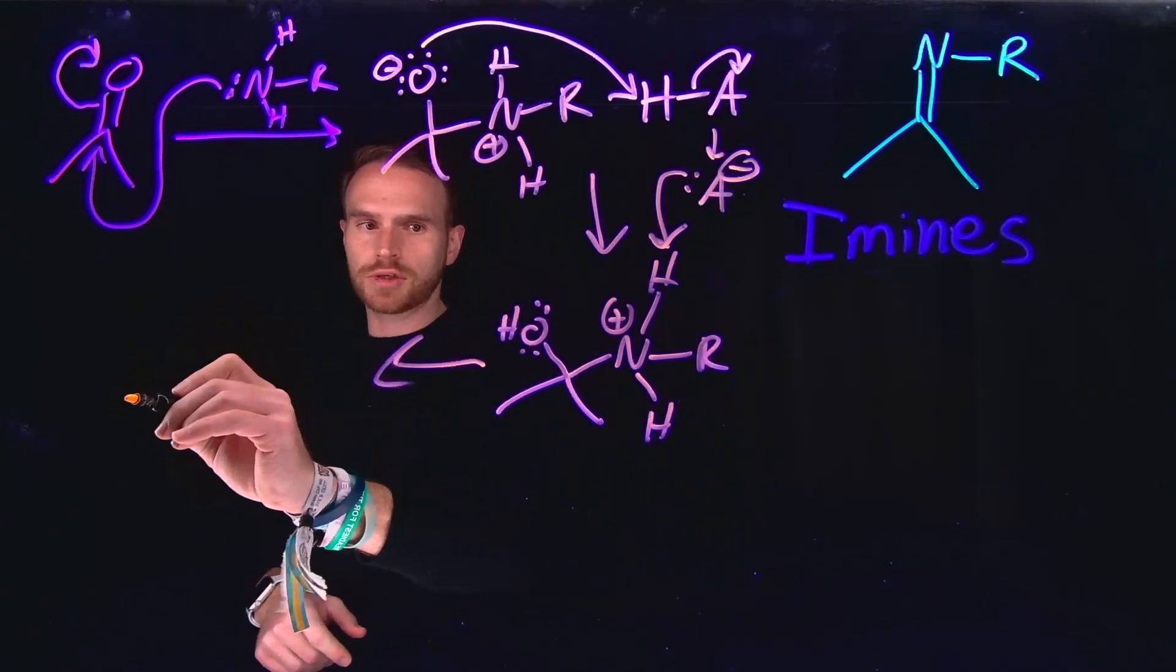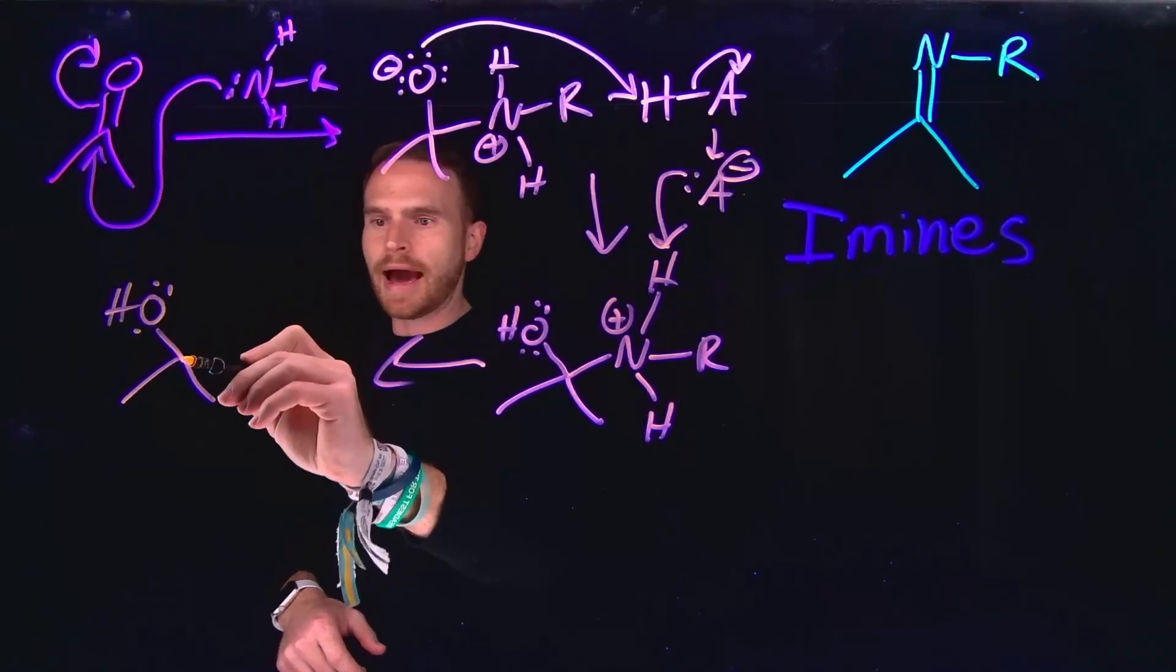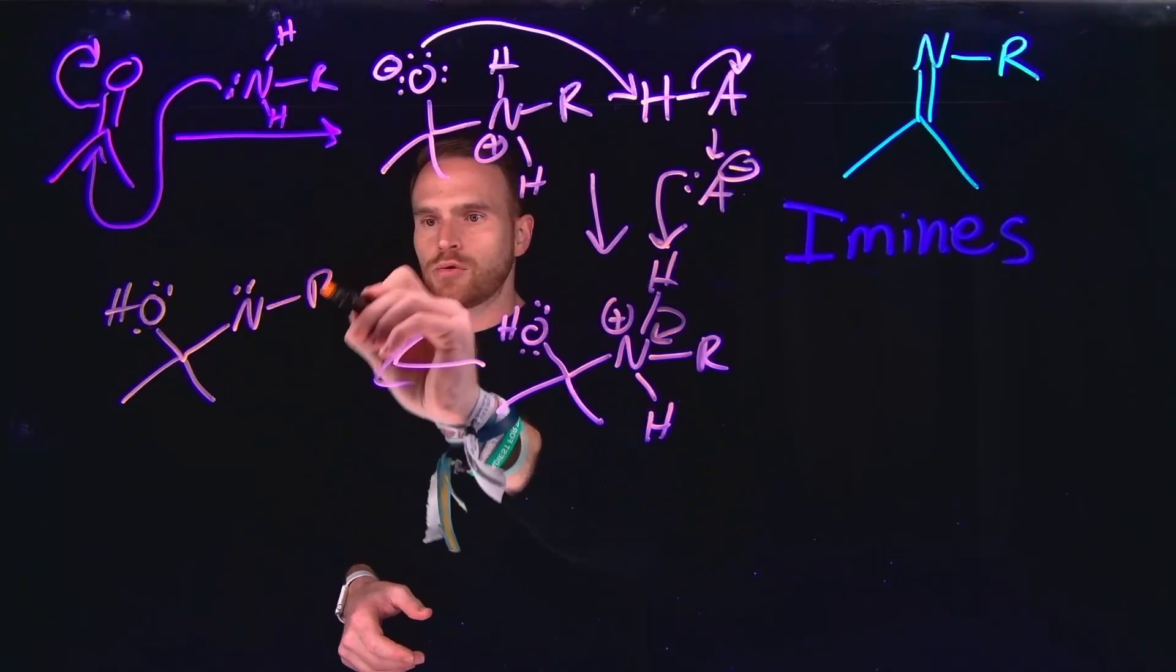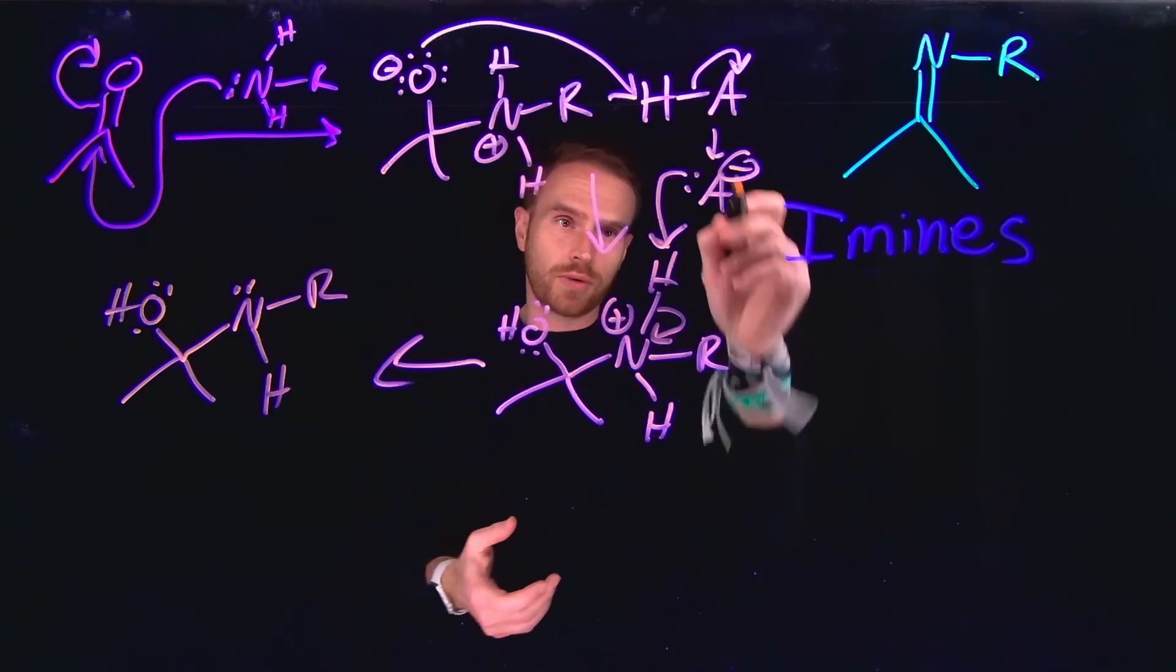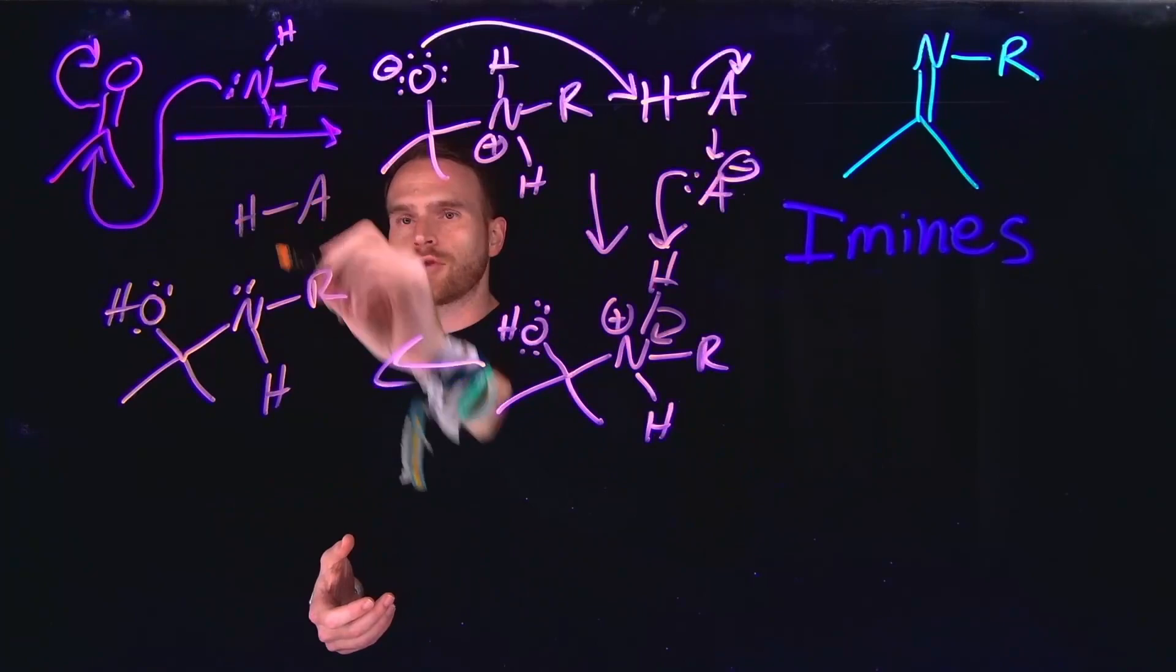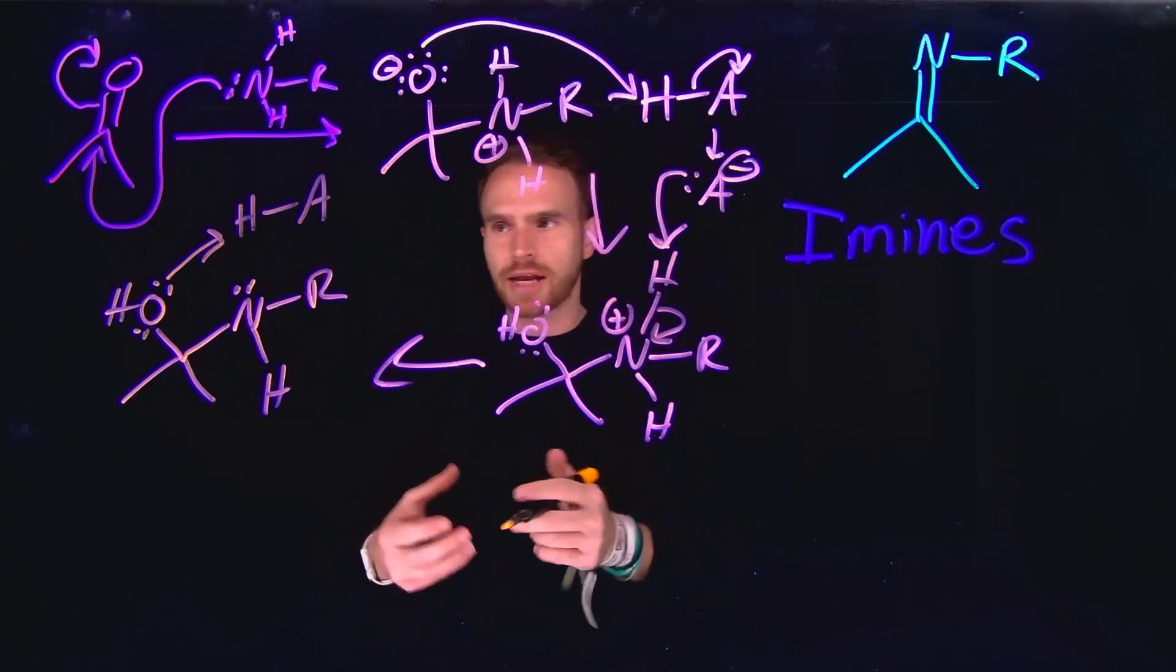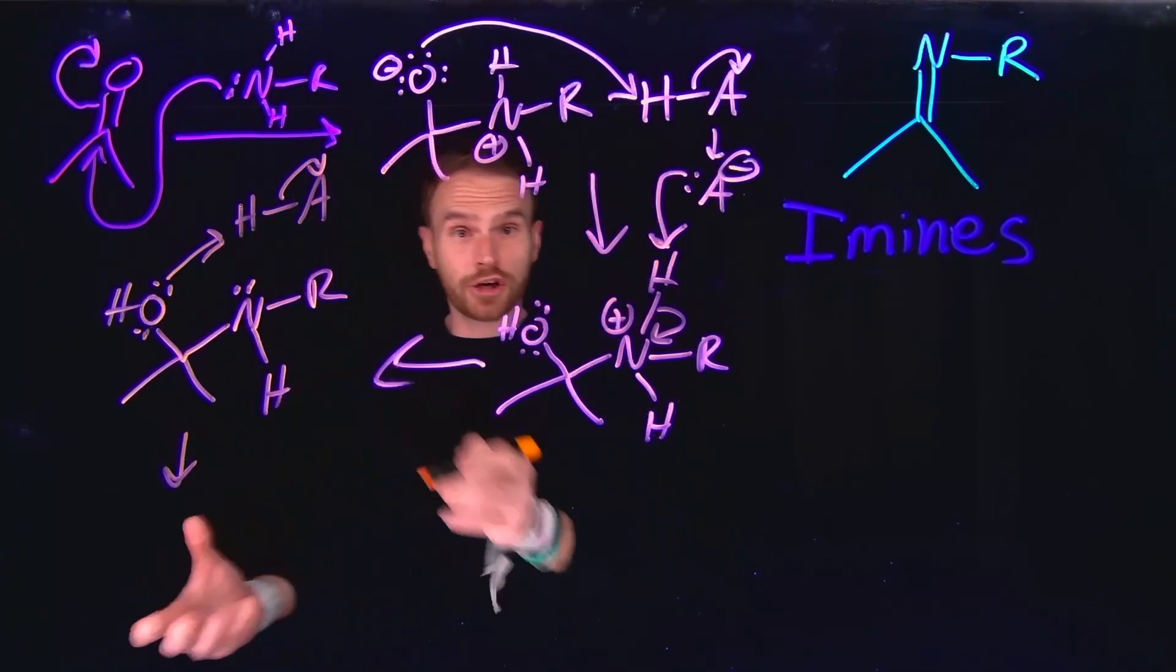And from there, this is going to generate a neutral compound where we have an alcohol and we have, since these electrons come down to the nitrogen, we now have a neutral amine. At this point, remember that we're still in acid. So we have regenerated our acid. And for that reason, what can happen, just like we've learned in similar mechanisms, is that the alcohol will be attracted via electrostatic attractions to this proton, allowing us to generate a good leaving group.